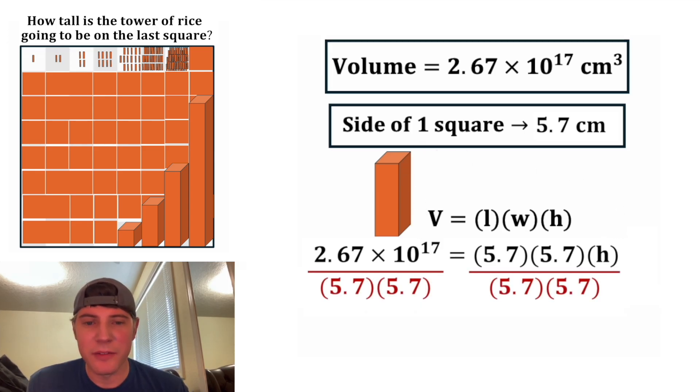Next, we can divide both sides of the equation by 5.7 times 5.7. On the left-hand side, that gives us 8.22 times 10 to the 15. And on the right-hand side, these cancel out, leaving us with just h. So this right here is our height in centimeters.